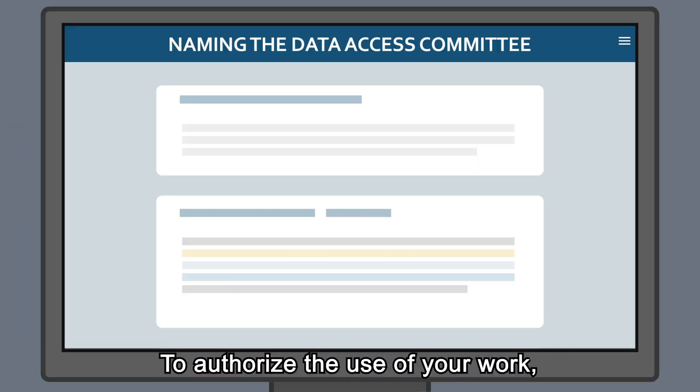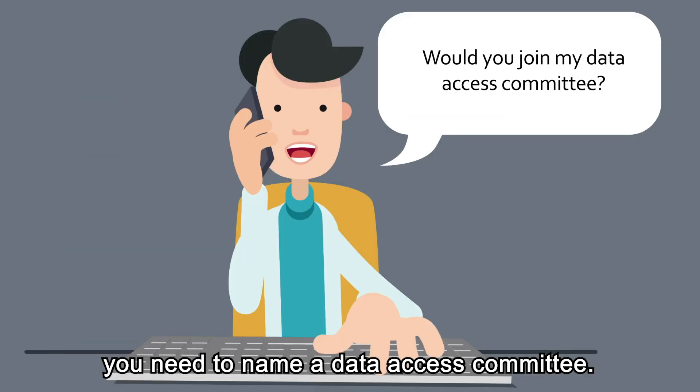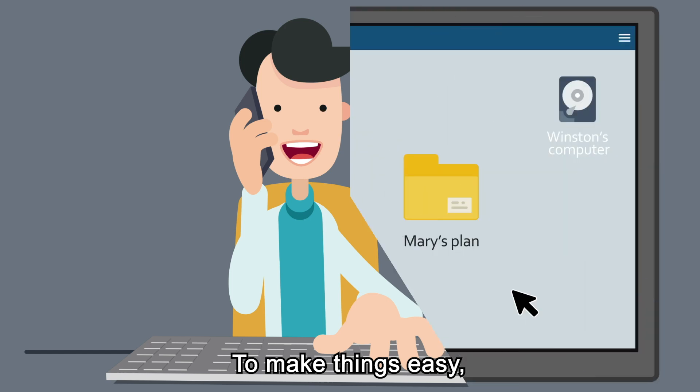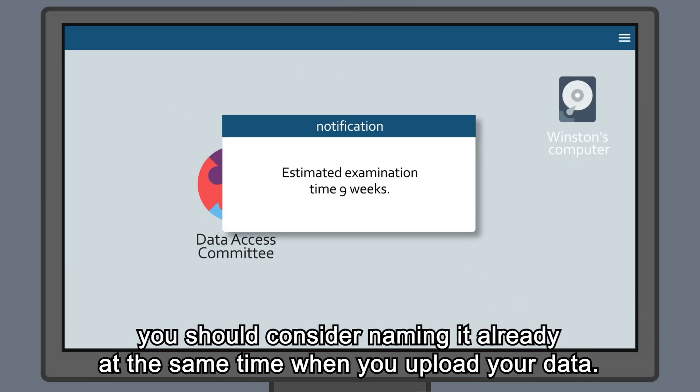To authorise the use of your work and the original data in it, you need to name a data access committee. To make things easy, you should consider naming it already at the same time when you upload your data.